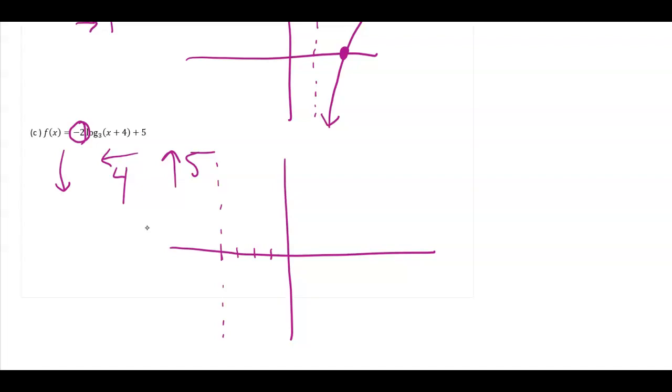Normally I would go through this way, but that point needs to move up. 1, 2, 3, 4, 5. And then I also have a flip and a stretch. So that log graph is actually going to look like so.